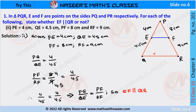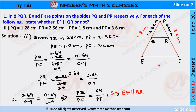These two ratios are equal, so we can say that EF is parallel to QR. In the next problem, triangle PQR is given where E and F are points on the extended lines PQ and PR respectively. Here E is on the extended line PQ and F is on the extended line PR, so we have to check whether EF is parallel to QR.